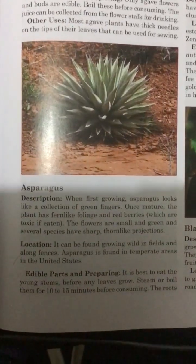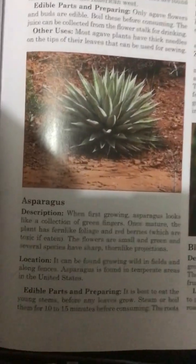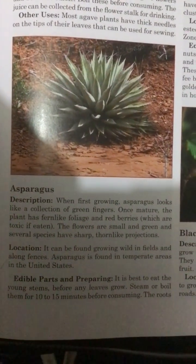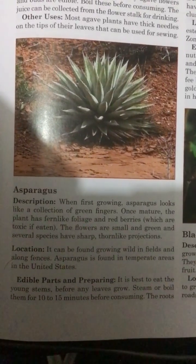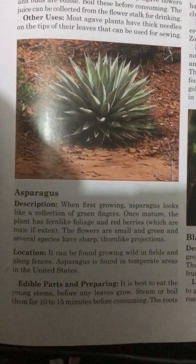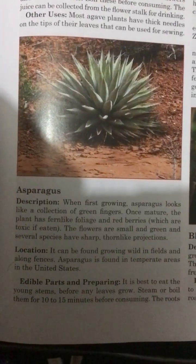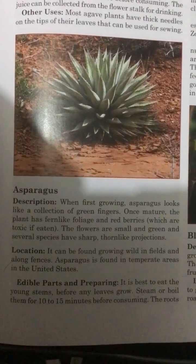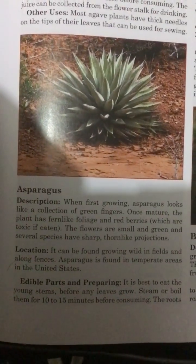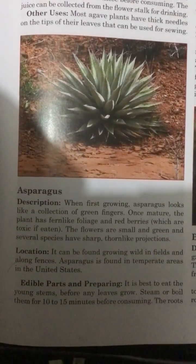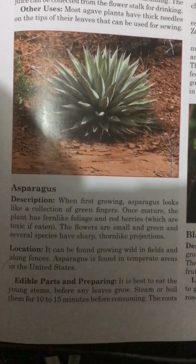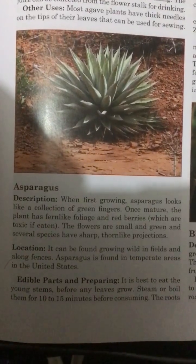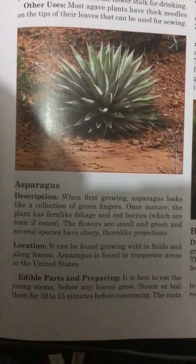Asparagus. Description: When first growing, asparagus looks like a collection of green fingers. Once mature, the plant has fern-like foliage and red berries, which are toxic if eaten. The flowers are small and green, and several species have sharp thorn-like projections.